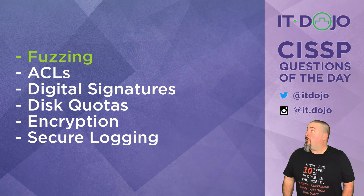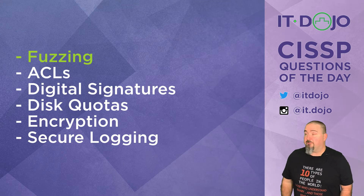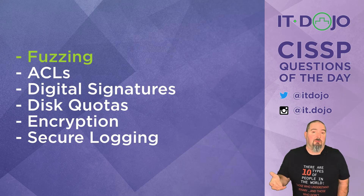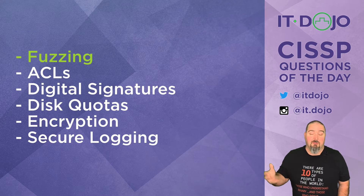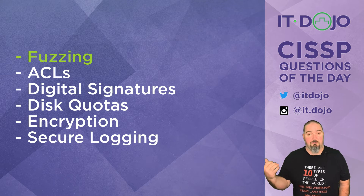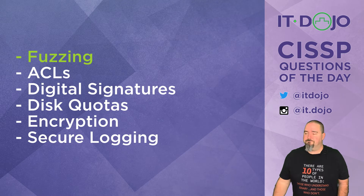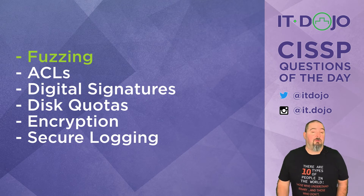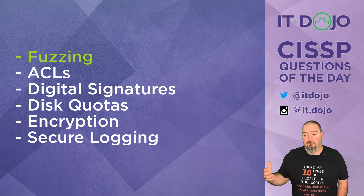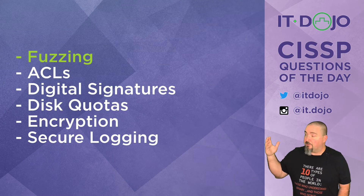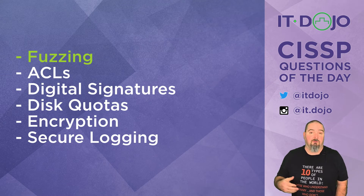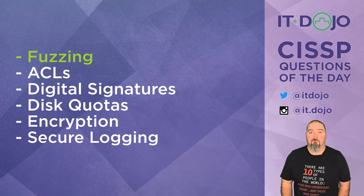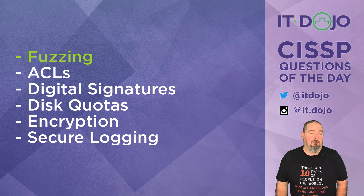So digital signatures are a mitigation technique for having better trust in data or an application. Disk quotas also help protect an application — they can prevent the hard drive from becoming full. It's not uncommon that if a hard disk becomes full, things don't error out gracefully; they tend to crash hard. Encryption — making stuff secret — is certainly a good thing, protecting an application and its data. And finally, secure logging helps protect information by providing a record of what's transpired, and by making it secure, you reduce the likelihood that attackers can tamper with log files to erase evidence. So the best answer is fuzzing.